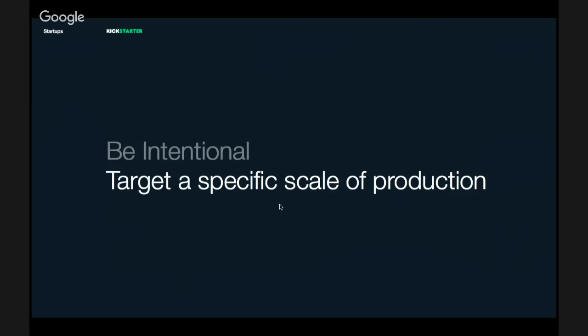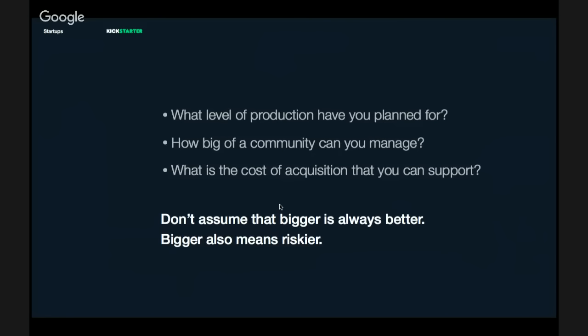Be intentional about the specific scale of production you're going for. If you've only figured out costs at a scale of 1,000 to 2,000 units and you end up needing to produce 10,000, you can put yourself in a tough situation — partners may no longer be appropriate, processes may no longer be adequate. Being intentional about your target, even setting limits on the number of items you'll produce, can ensure you're able to deliver on production and fulfillment and keep your community happy.